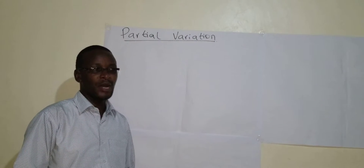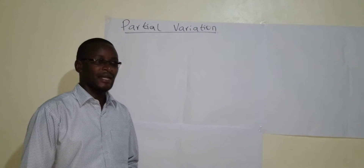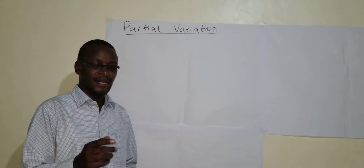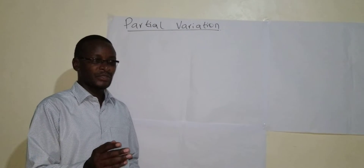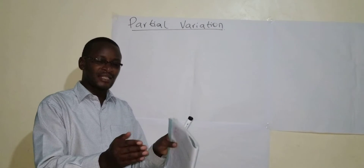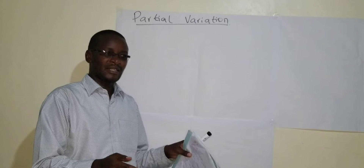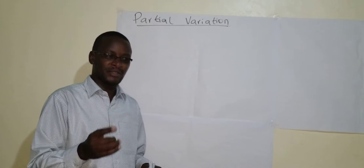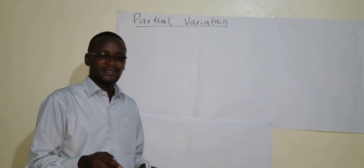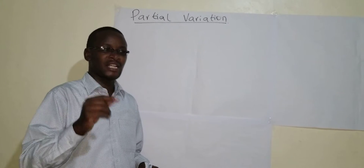When you hear the word partial, you think about parts. And in mathematics, when you think about parts and connect them to variation, it means you take one portion and then you add it to another. So in partial variation, there is one sign which is very important, and that is the addition sign. When you think about partial variation, there must be an addition sign.